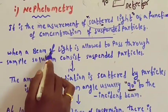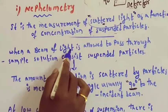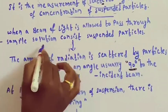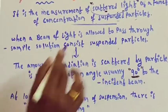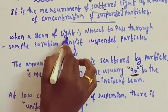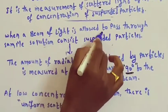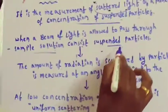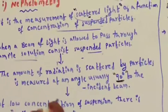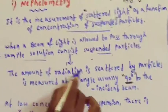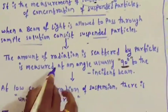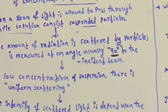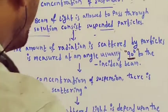When a beam of light is allowed to pass through a sample solution that consists of suspended particles, the amount of radiation scattered by the particles is measured at any angle, usually 90 degrees to the incident beam.